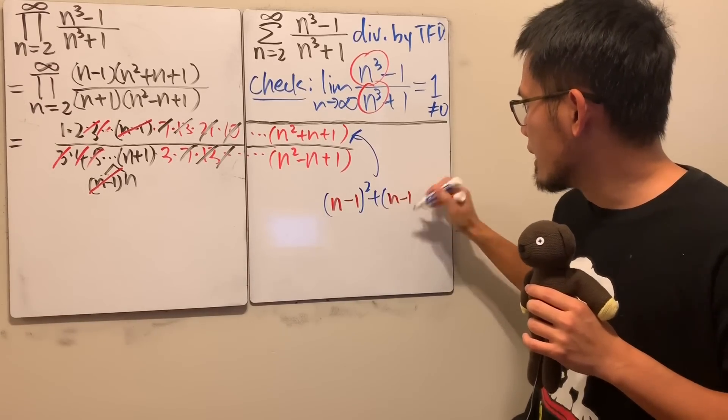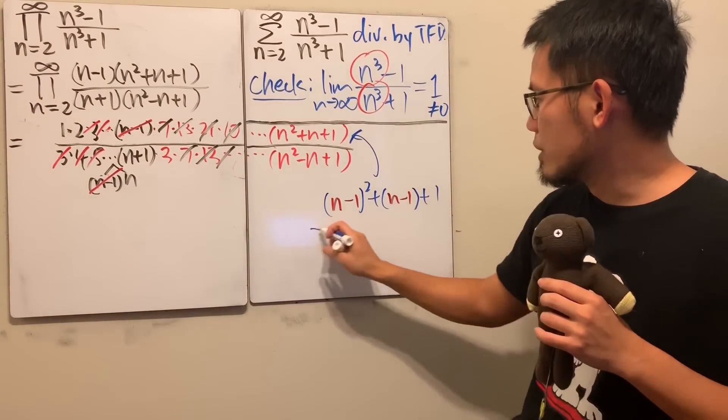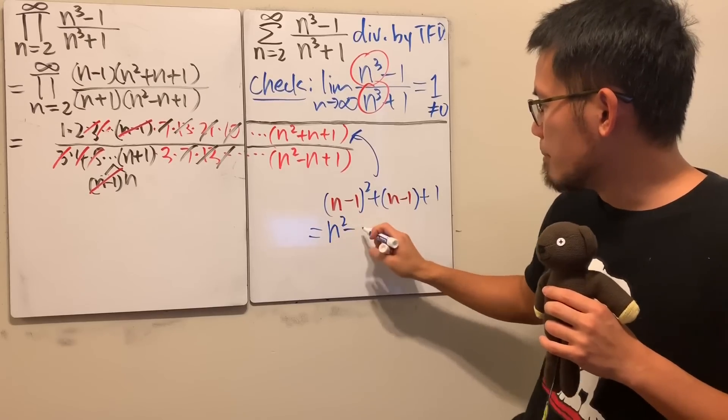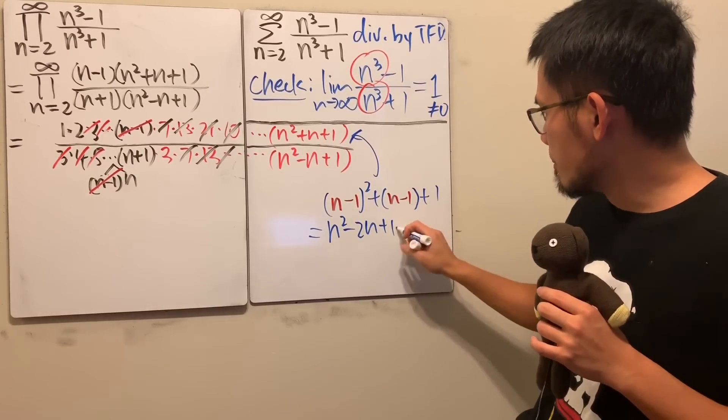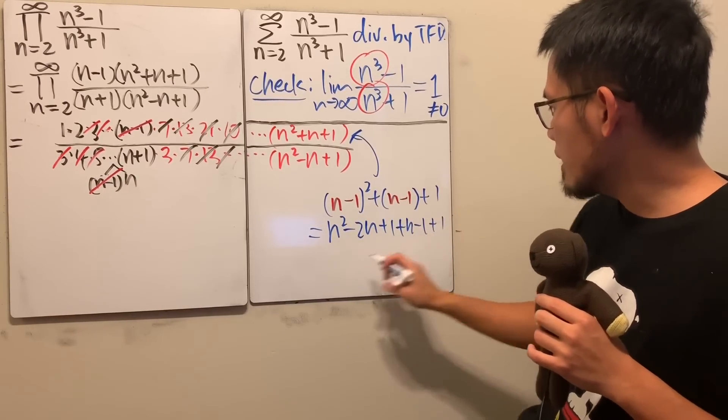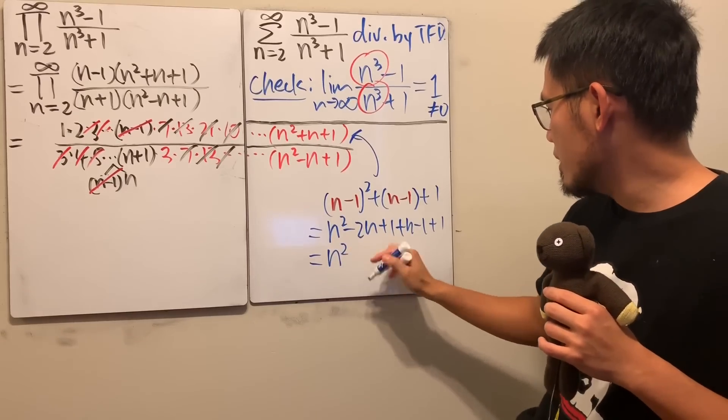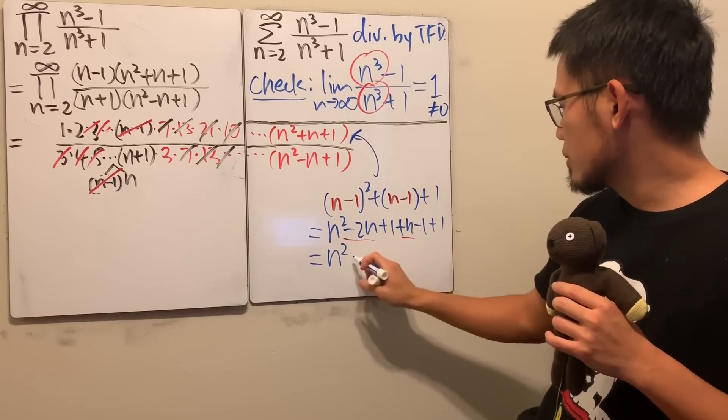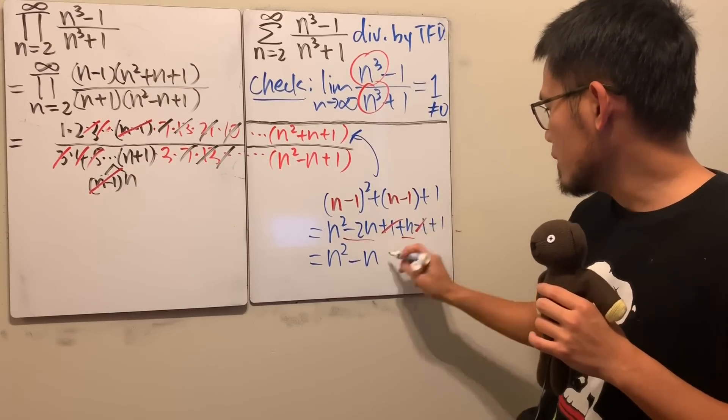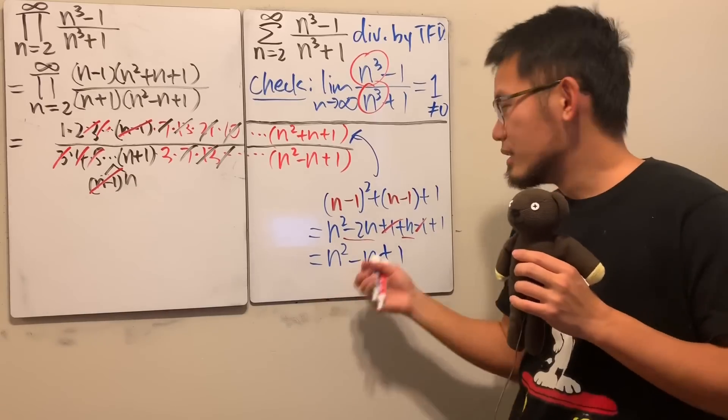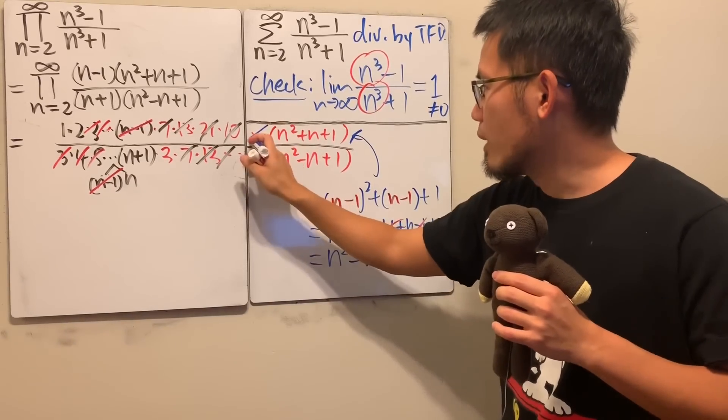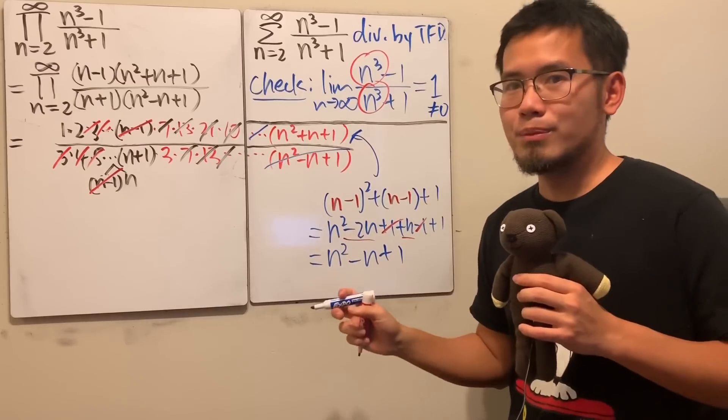multiply this out. This is just n square minus 2n plus 1 plus n minus 1 plus 1, and you see, this is n square, this and that is just minus n and then plus 1. Right? Right? So that means the term before will cancel with this term, so this is true.